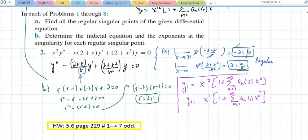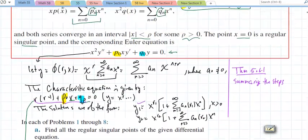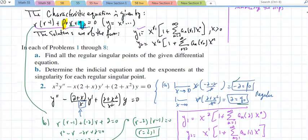You're going to work those out. 1 through 7 odd. Page 229. This is on page 229. And there's the homework.